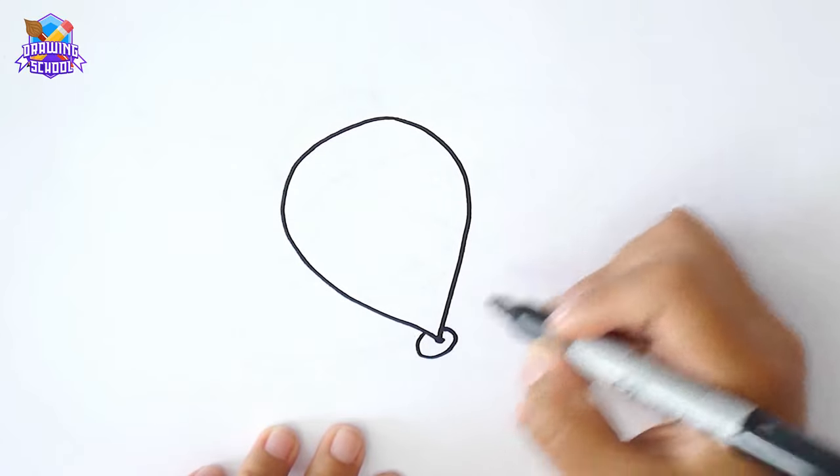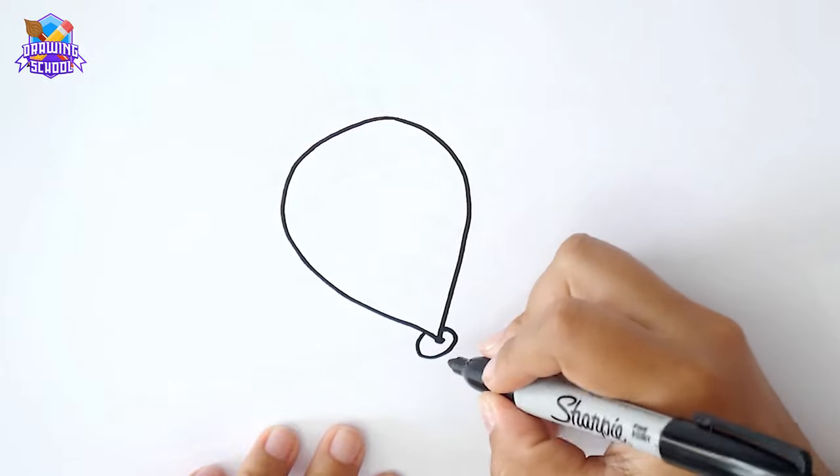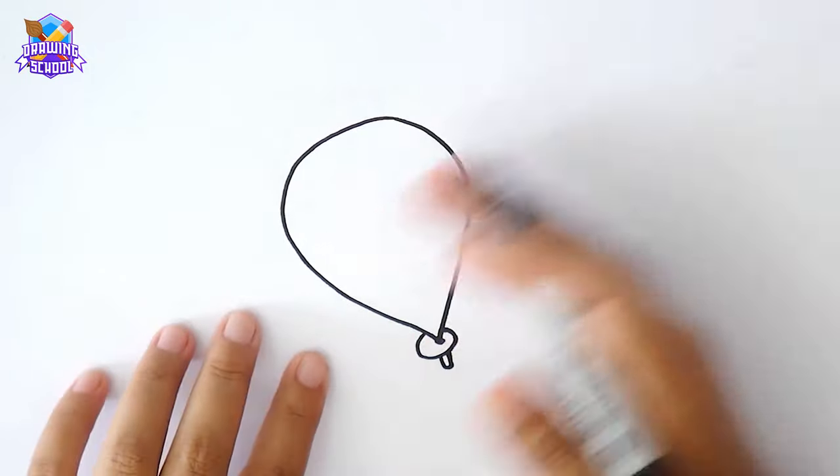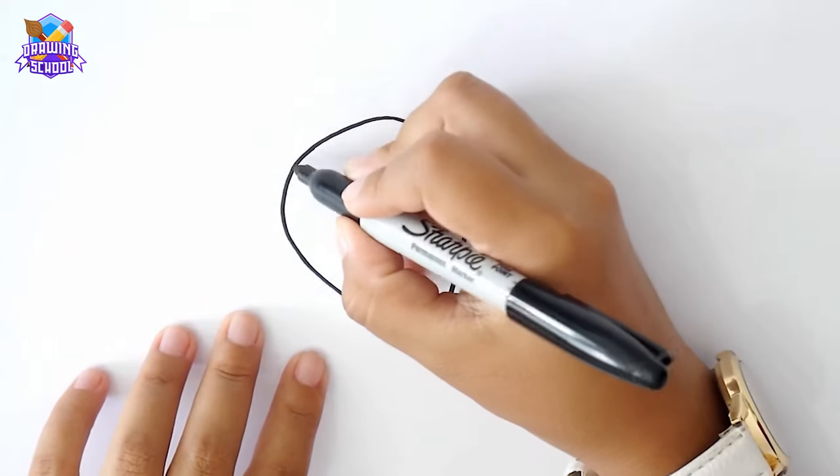We're going to add a little oval in here, and then we're going to draw a curved line in the upper part.